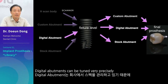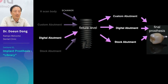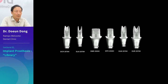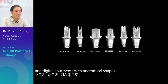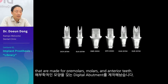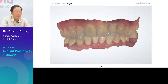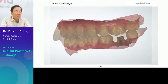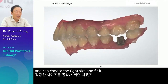Digital abutments can be tuned very precisely. Because the specifications are controlled by the company, there is a digital library and digital abutments with anatomical shapes made for premolars, molars, and anterior teeth. Therefore, we can have this at the clinic and can choose the right size and fit it.